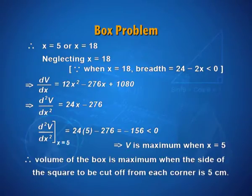We are interested in finding the side of square to be cut off from each corner, then that side has to be 5 so that the volume is maximum. If you want to find also the maximum volume, then you can put x equal to 5 in the volume function and get the maximum volume.